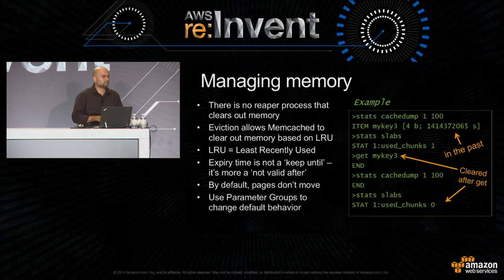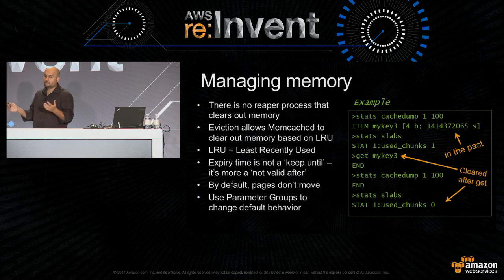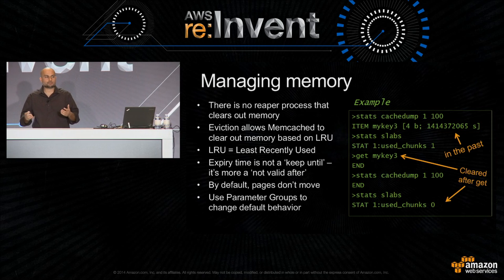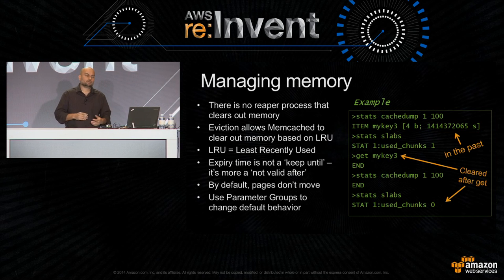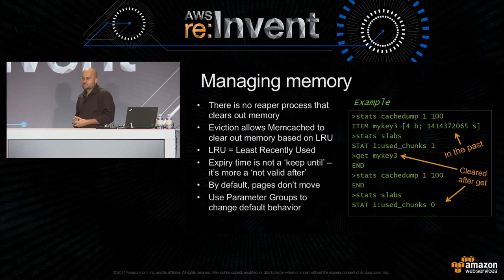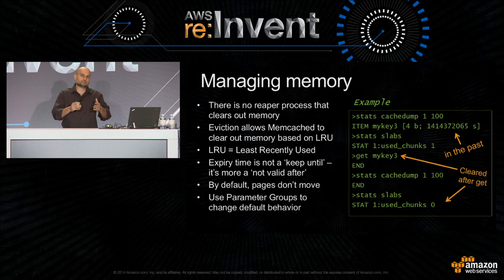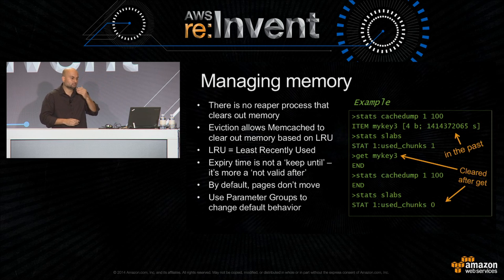Eviction is basically Memcached's way of saying, 'Hey, I've run out of space in this particular slab. I need to get rid of something.' It uses an algorithm — LRU, least recently used — and keeps track of every time an object has been accessed. In a particular slab, if it needs more memory, it will go to the back of whatever has been accessed and start throwing it out.